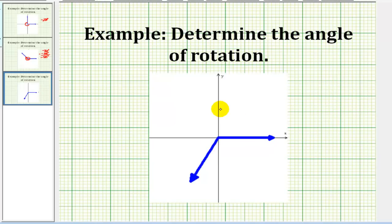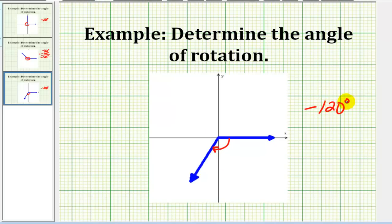Let's take a look at one more example. Let's rotate clockwise now, so we know it's a negative angle. We have negative 90, and then it looks like another negative 30 degrees. Negative 90 plus negative 30 would give us an angle measure of negative 120 degrees.